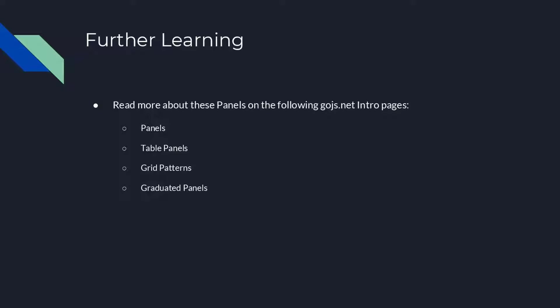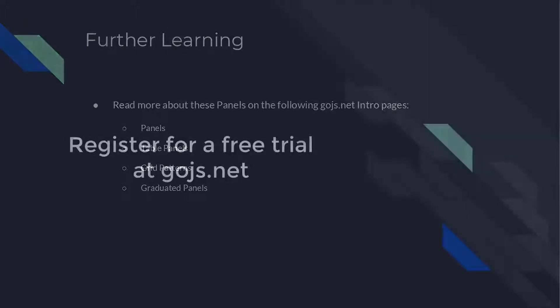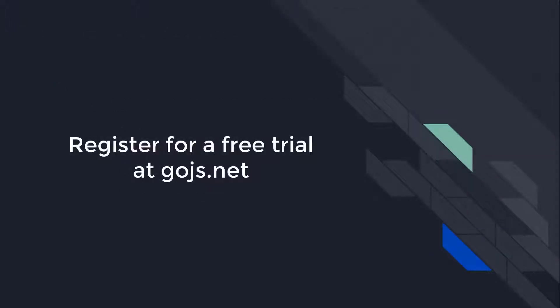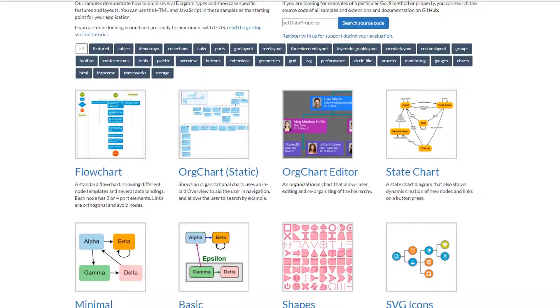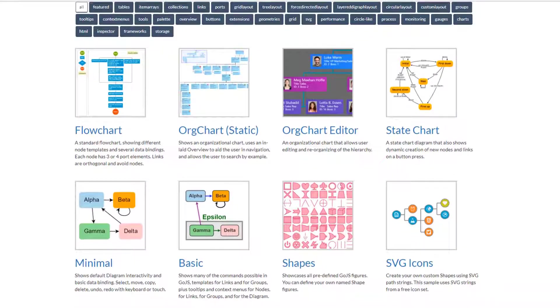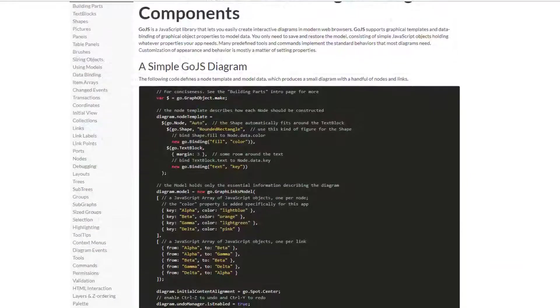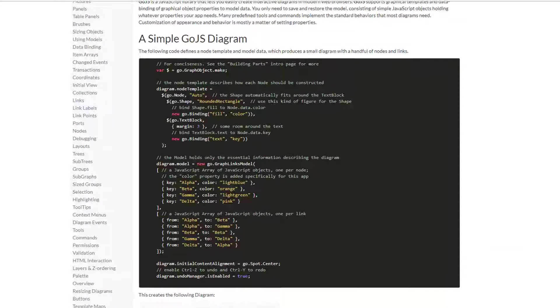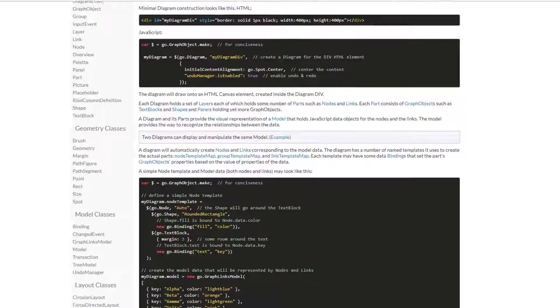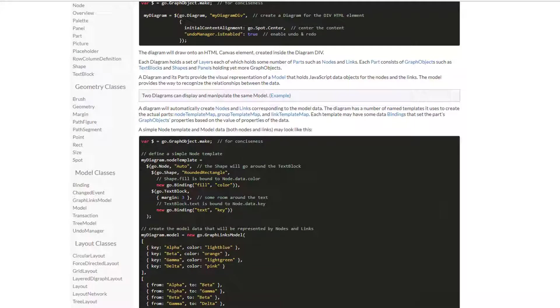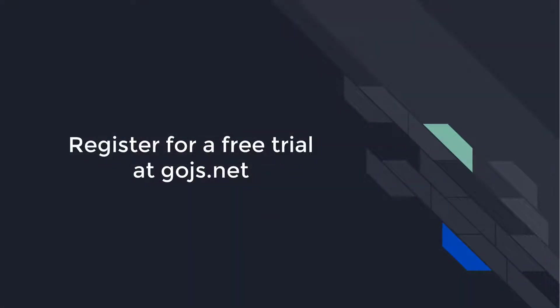That's it for this video. To learn more, visit the intro pages on panels and table panels, or read the full documentation on gojs.net. Head over to gojs.net to see hundreds of samples, read more about Go.js features on the intro pages, or peruse the full API documentation. Sign up for an unlimited free trial and you'll get 30 days of developer-to-developer support for free.